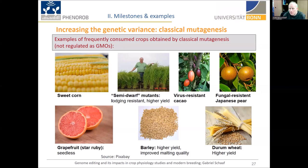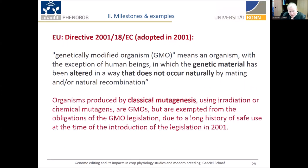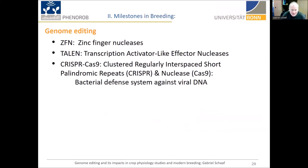The mutations induced by these techniques are indistinguishable from spontaneous mutations. It might be surprising that this is not regulated as GMO technology. The European Union's reasoning is that organisms produced by classical mutagenesis using irradiation or chemical mutagenesis are technically GMOs, but they are exempted from the obligations of the GMO legislation due to a long history of safe use at the time the legislation was introduced in 2001.